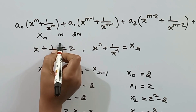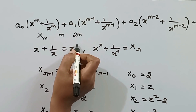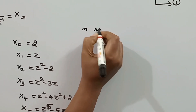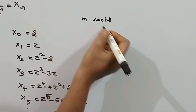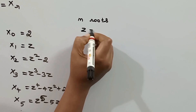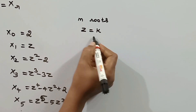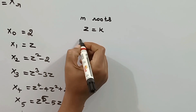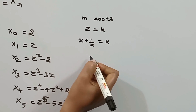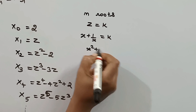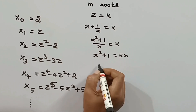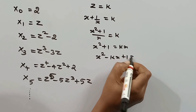After reducing the equation, we solve for the roots. The reduced equation in z has m roots. For every root k of the reduced equation in z, we substitute back using x + 1/x = k. This gives a quadratic equation: x² − kx + 1 = 0. Each root k of the reduced equation yields two corresponding roots of the original reciprocal equation via this quadratic.